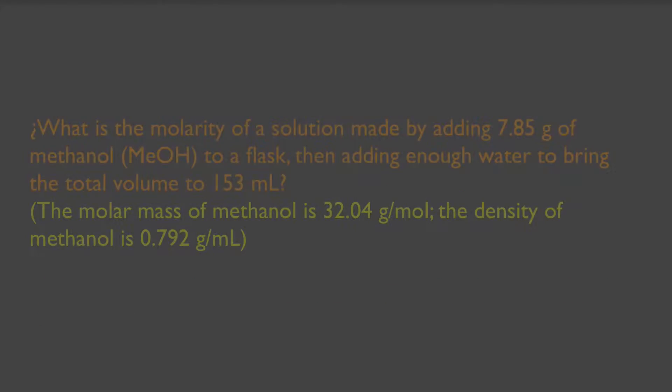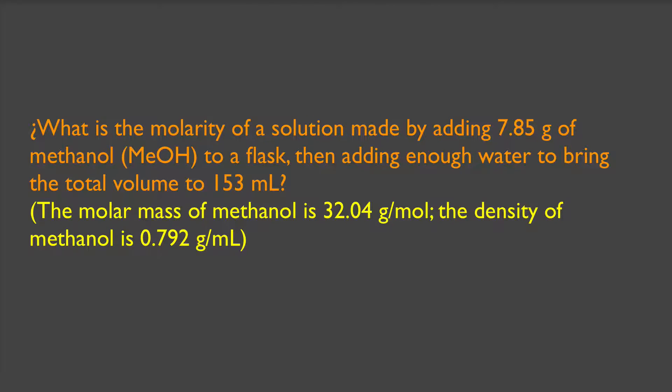First, let's consider calculating molarity from data given. For example, what is the molarity of a solution made by adding 7.85 grams of methanol to enough water to bring the total volume to 153 milliliters? The molar mass of methanol is 32.04 grams per mole, and the density of methanol is 0.792 grams per milliliter.